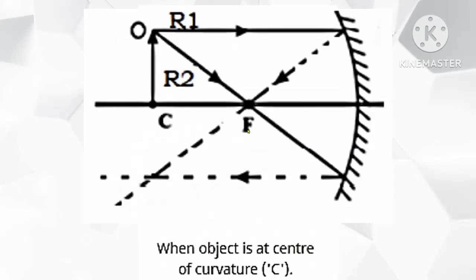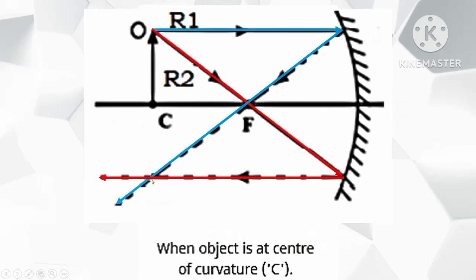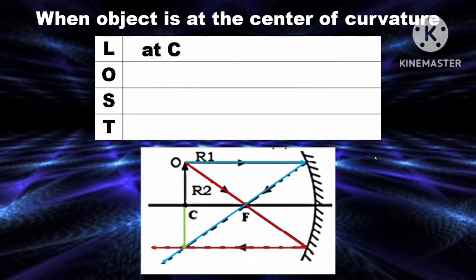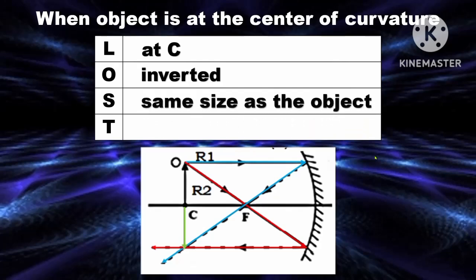Next, what if the object is at the center of curvature? Let's use ray 1 and ray 2 only. From the object, strike the mirror and reflect it to the focus. Ray 2: strike it to the focus and reflect it to the principal axis. The intersection between the two rays is found at C. So the location is at C. The orientation is inverted. The size is the same size as the object. And the type of image is real.